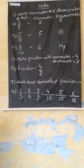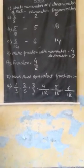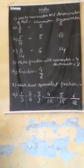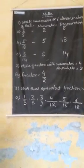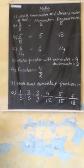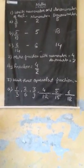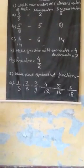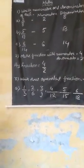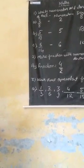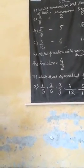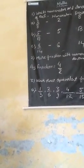Our first question is: write the numerator and denominator of each. Our question is 2 upon 8. As we know, the upper part is called numerator and the lower part is called denominator. So we write numerator as 2. 2 is numerator and 8 is denominator.